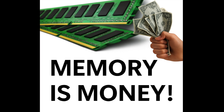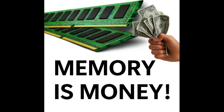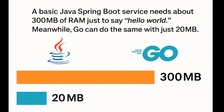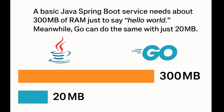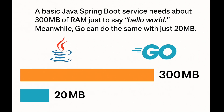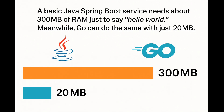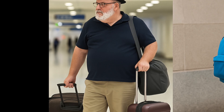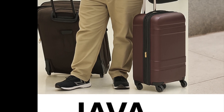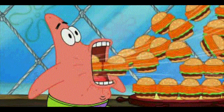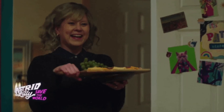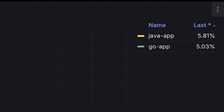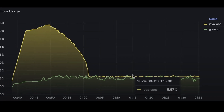In the cloud era, memory is money, and here is where things get really interesting. A basic Java Spring Boot app needs about 300 megabytes just to say hello world, while Go can do the same with just 20 megabytes. Java's memory usage is like your friend who comes over and eats everything in your fridge; Go is like that polite guest who brings their own snacks.